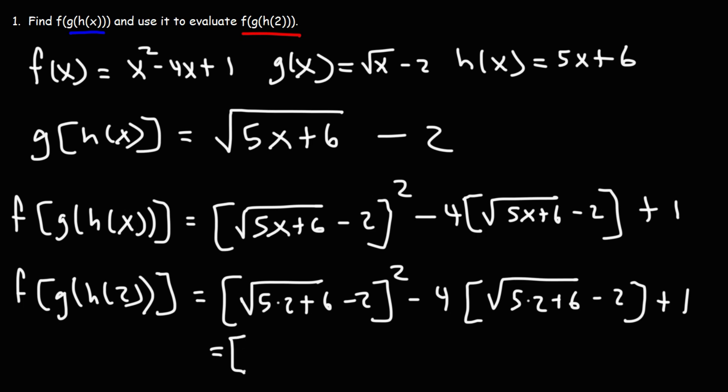5 times 2 is 10. 10 plus 6 is 16. The square root of 16 is 4. Now, 4 minus 2 is 2. And so we get this.